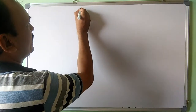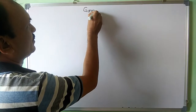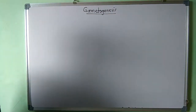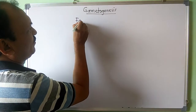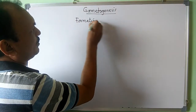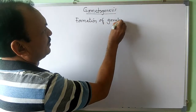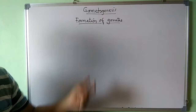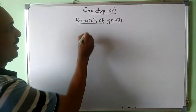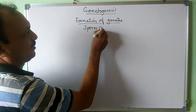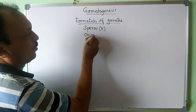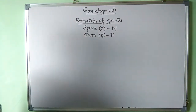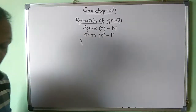Today's topic is gametogenesis. Gametogenesis is the formation of gametes. Gametes are produced by a kind of process called gametogenesis. The gametes — sperm and egg — are always in n number. This is the male gamete and this is the female gamete. So why is gametogenesis required?